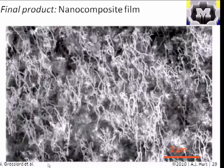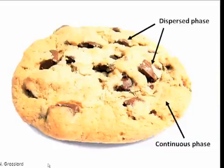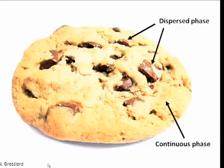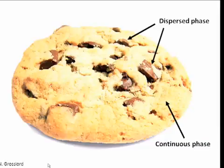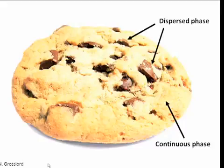We'll take off from this example in a few lectures when we talk about the scaling of network properties and how conductive this material is. The paper compared this to a cookie — the chocolate chips are the dispersed phase and the polymer is the continuous phase. Just as you want chocolate chips uniformly distributed in a cookie rather than all in the center, you want a uniform mixture of nanotubes in the polymer — it's managing the mixing process only on a different scale with different materials.